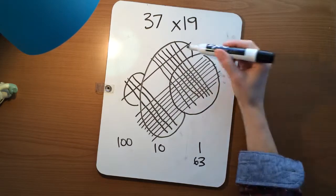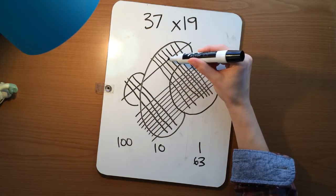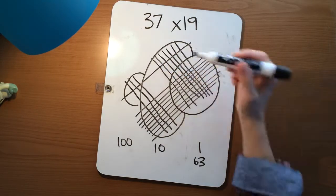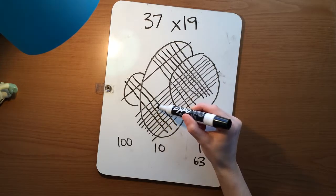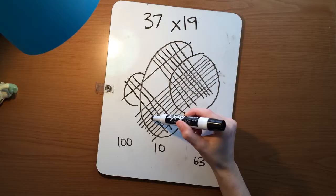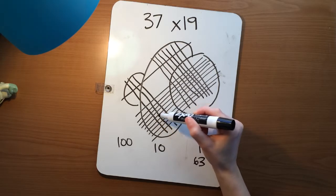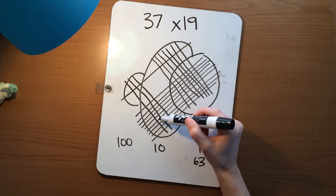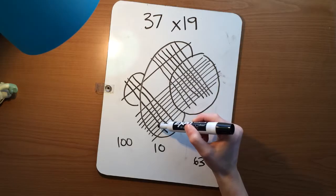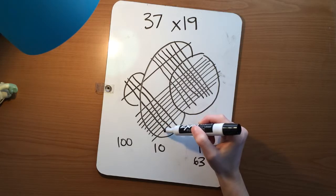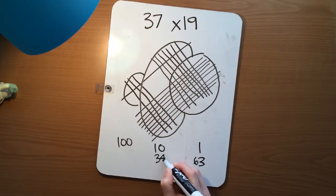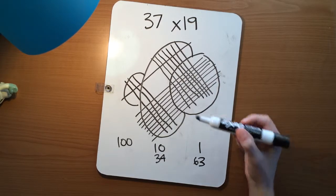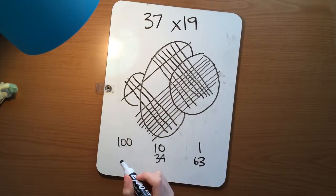For our tens place, 1, 2, 3, 4, 5, 6, 7, 8, 9, 10, 11, 12, 13, 14, 15, 16, 17, 18, 19, 20, 21, 22, 23, 24, 25, 26, 27, 28, 29, 30, 31, 32, 33, 34. 34. And the hundreds, last but not least, and easiest, we have 3.